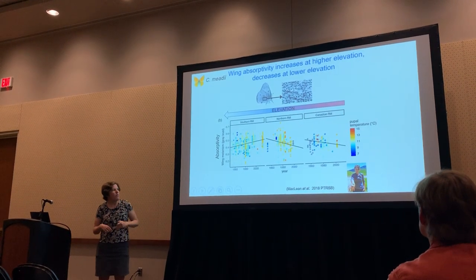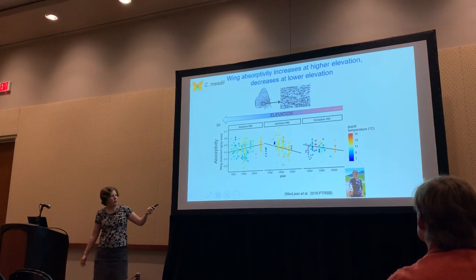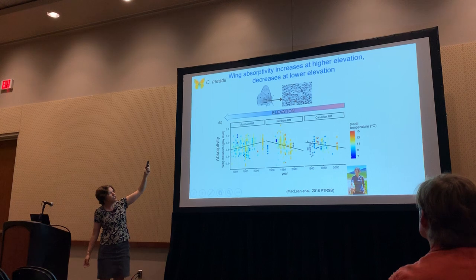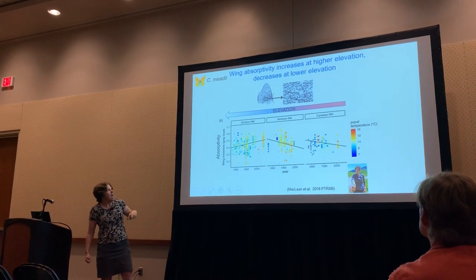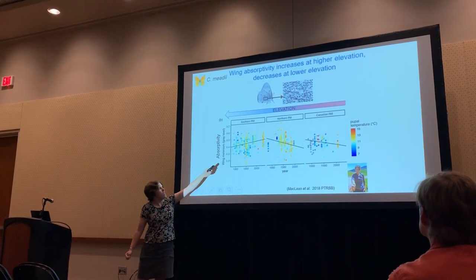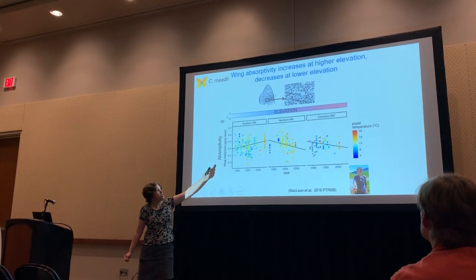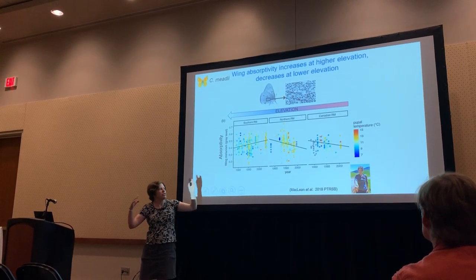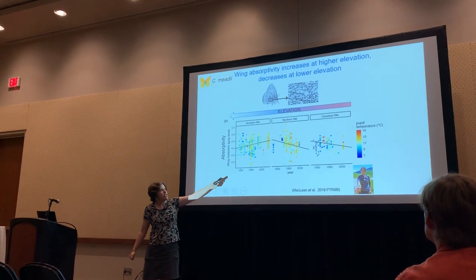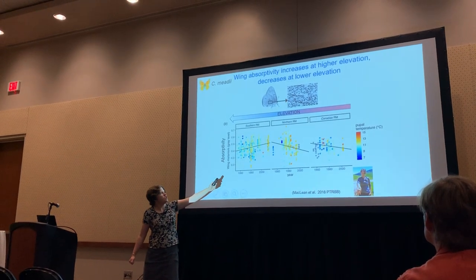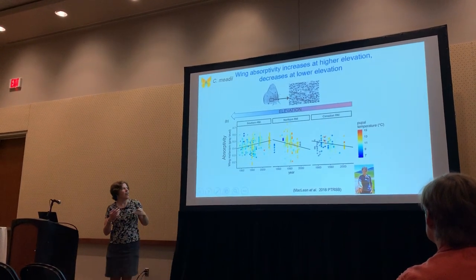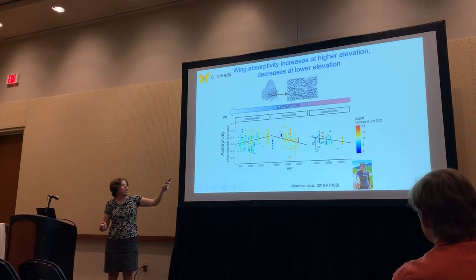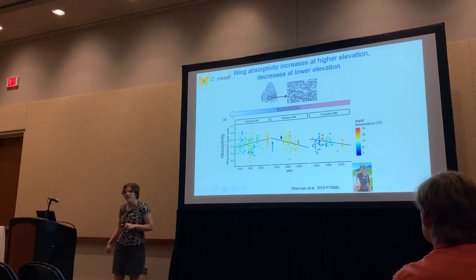One way we've tried to test our model is by looking at museum specimens of the higher elevation species Coleus medii. We do see wing darkening through time at high elevation sites, and wing lightening through time at lower elevation regions. The idea of a shift through time and space in the direction of selection is upheld when looking at museum specimens.